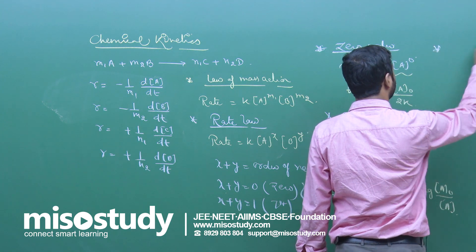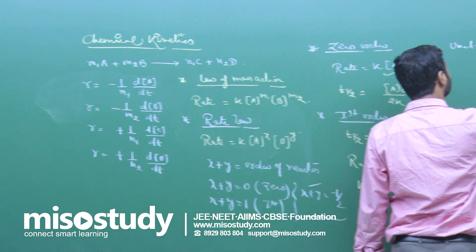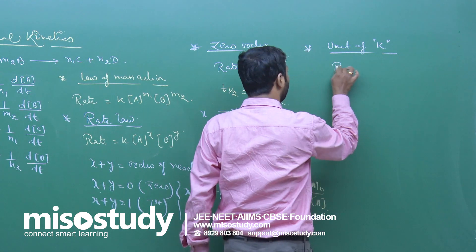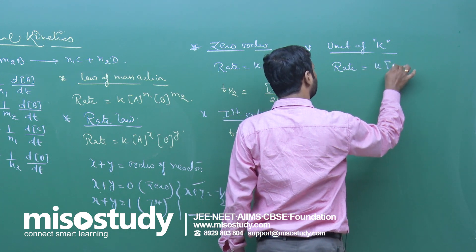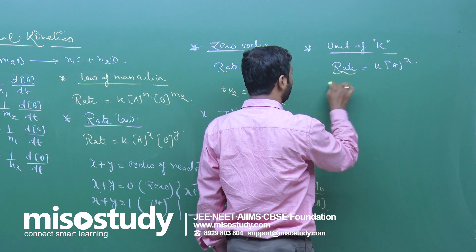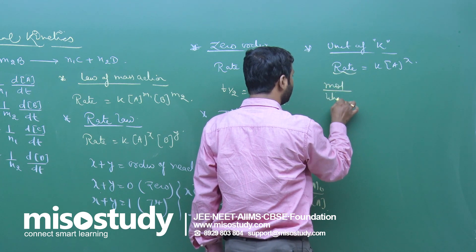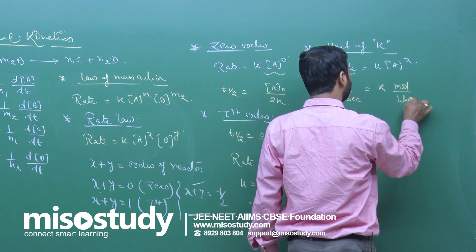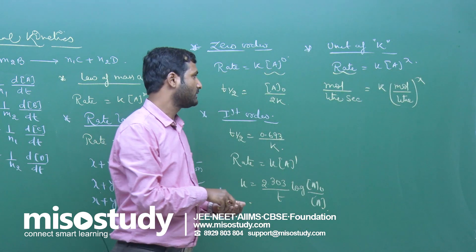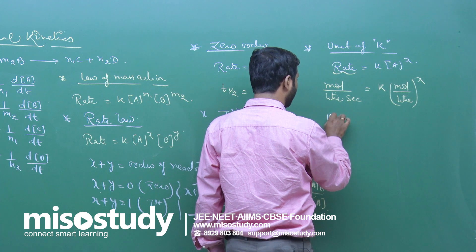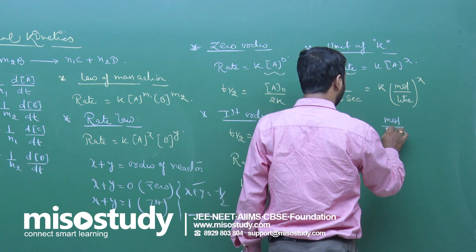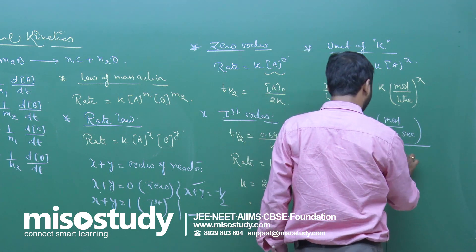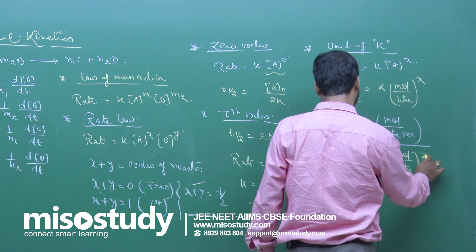Now let's look at the unit of rate constant k. Since rate = k[A]^x, the unit of rate is mol/L/s and the unit of concentration is mol/L. So k = (mol/L/s) / (mol/L)^x.